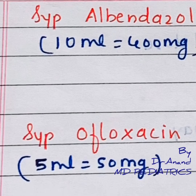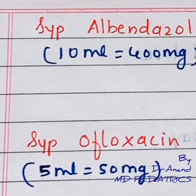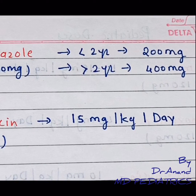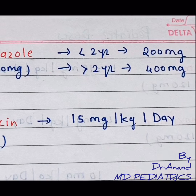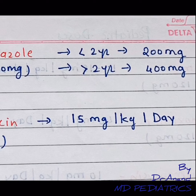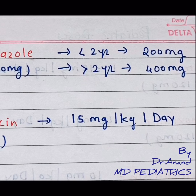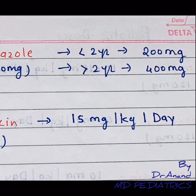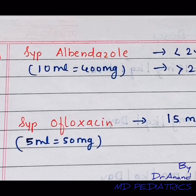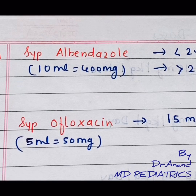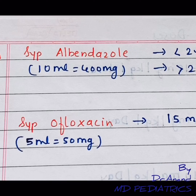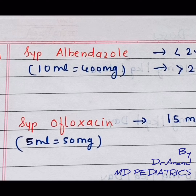The dose is very important. For the per-oral dose, ofloxacin is 15mg per kg per day in 2 divided doses. The IV dose is 5 to 10mg per kg per day divided every 12 hours. Ofloxacin also comes in combinations: ofloxacin plus metronidazole, ofloxacin plus ornidazole, or ofloxacin plus tinidazole.